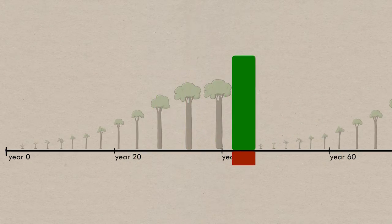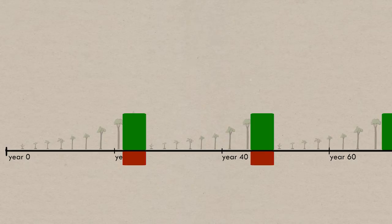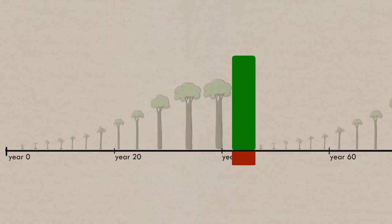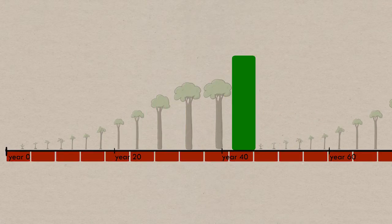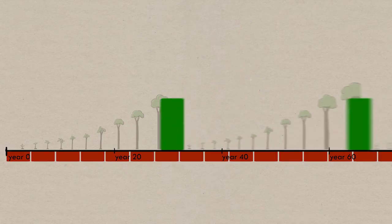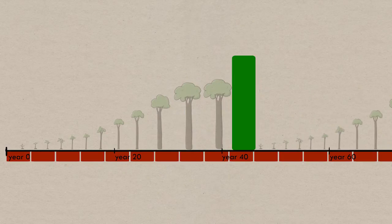Before we go any further, it's important to understand what things don't affect the rotation age. Replanting costs does affect it, because how much replanting costs we have to pay depends on how often we harvest. But a cost that comes every year, let's say like a land tax, that's just always the same, doesn't matter how much we harvest, we're still going to have to pay the same amount of money. So it doesn't affect the optimal rotation decision.